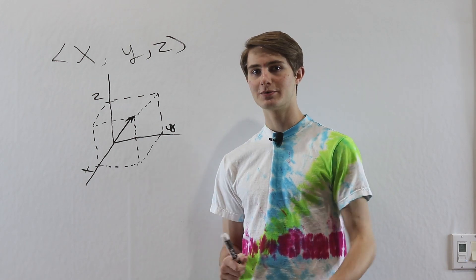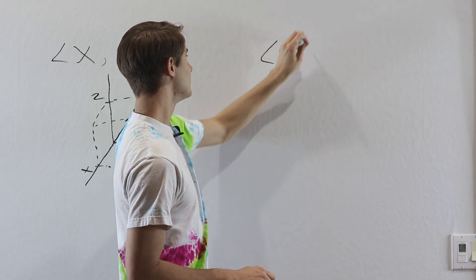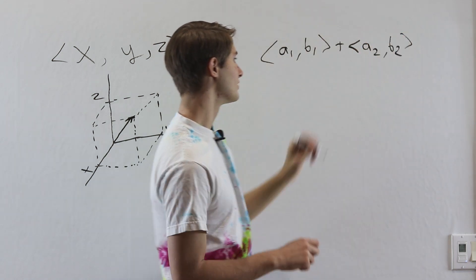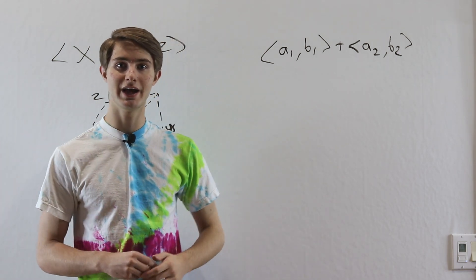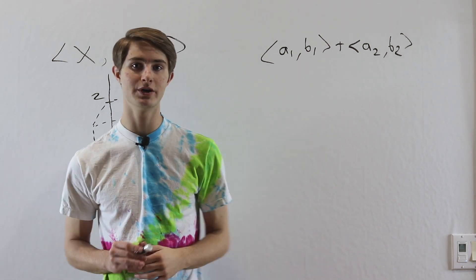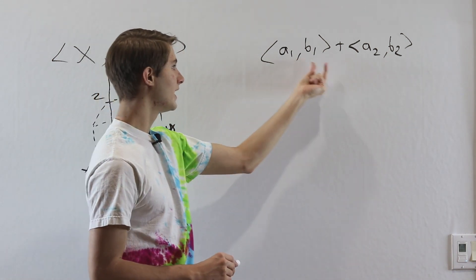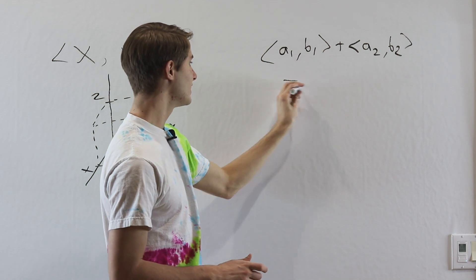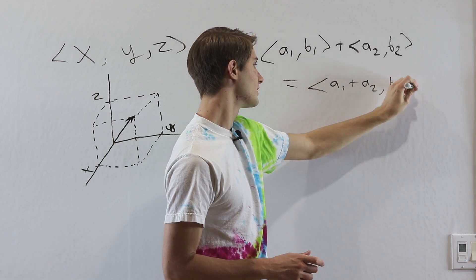Now we're going to take a look at some basic properties of vectors, starting with vector addition. Say we have a vector ⟨a1, b1⟩ and we want to add it to ⟨a2, b2⟩. Remember that the components of a vector operate independently — x components and y components can interact with each other without worrying about the other part. So when adding two vectors, we add each part separately: we end up with ⟨a1 + a2, b1 + b2⟩.